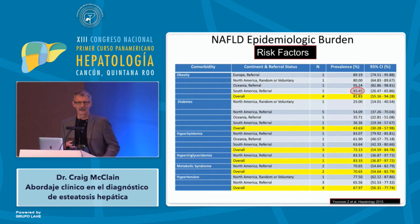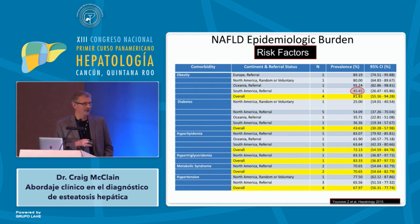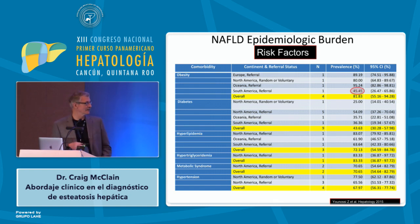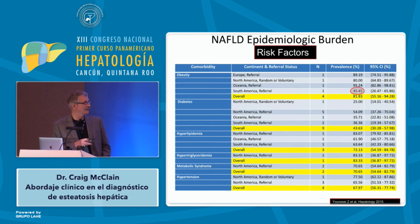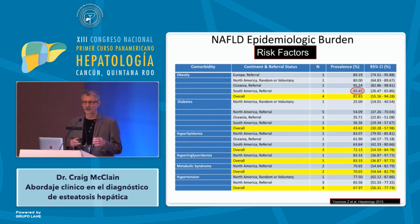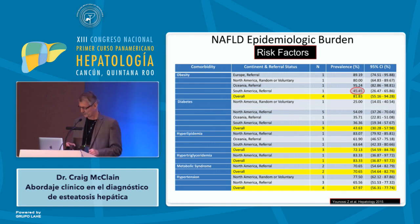What are the epidemiologic risk factors? They're very similar from one part of the world to another: obesity, hypertension, diabetes, hyperlipidemia — things you've heard about this morning. An important factor is that in the United States we have a much higher rate of obesity than much of South America, so for us it's easier to identify patients at risk.